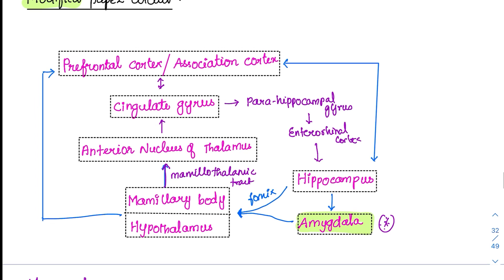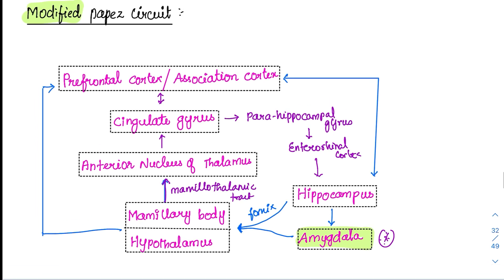Now we need to understand the functions of all these structures. The hippocampus is very much involved in short-term memory, and it is also involved in the conversion of short-term to long-term memory. The conversion of short-term to long-term memory occurs with the help of the hippocampus. The amygdala is very essential for emotional memory.